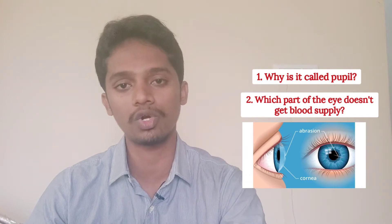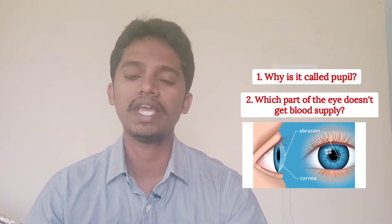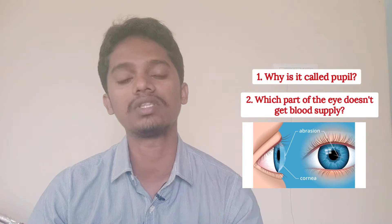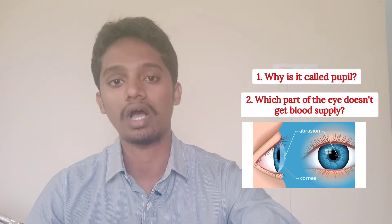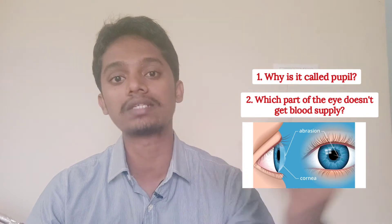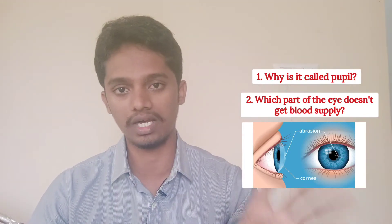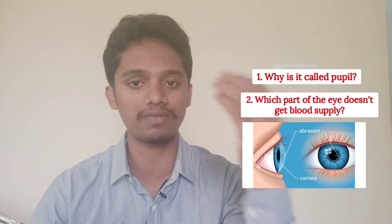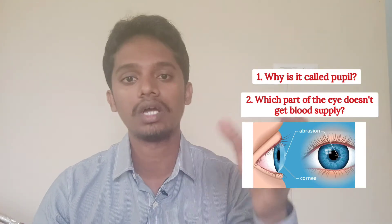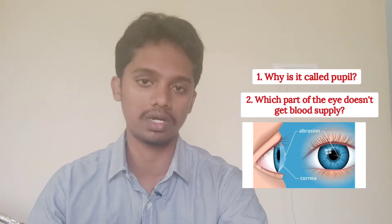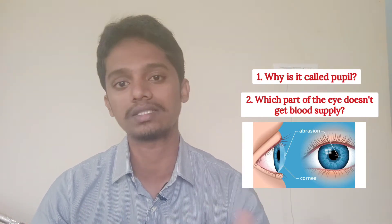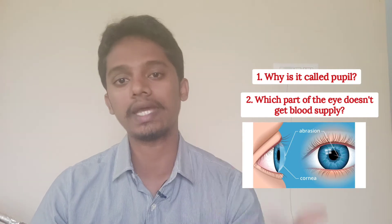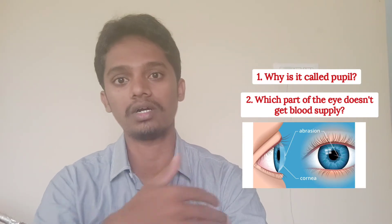If you look at the cornea, there is a reason. The cornea is the outer layer of the eye, and the usual blood flow function is to supply oxygen to tissue. But the cornea doesn't require blood for oxygen because there is air and oxygen directly available in the external environment. The cornea gets oxygen directly from the air, from the external environment.